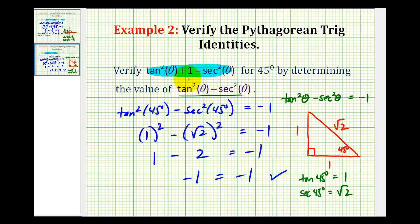Again, this is not a proof, but it does verify the identity is true for 45 degrees. Even though, because it's an identity, we know it's true for all angles.